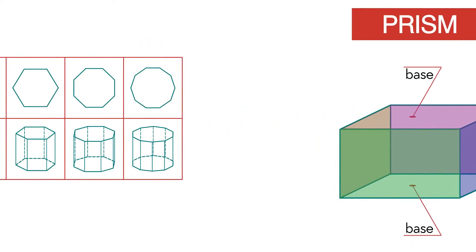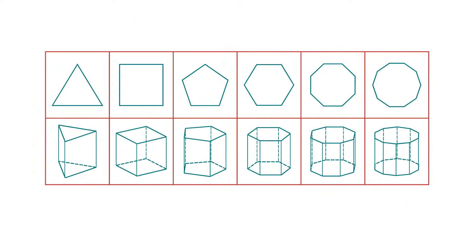The base shape of a prism is used to name the solid figure. A triangular prism has two bases that are triangles. All faces of a rectangular prism are rectangles. For a pentagonal prism, the two bases are pentagons.